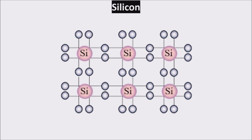In this configuration, we don't have free electrons at zero kelvin, but at room temperature a few electrons can have the energy to break the bonds and become free electrons. However, they are too few to turn silicon into a good conductor.